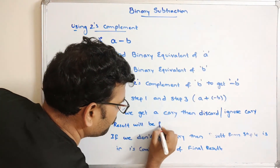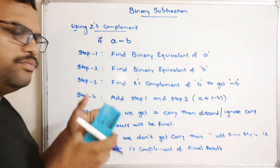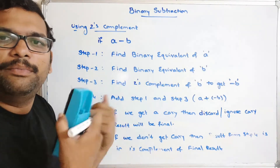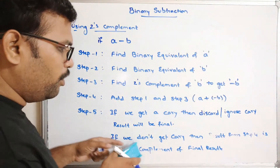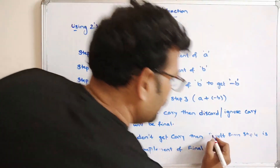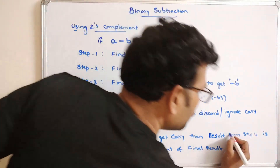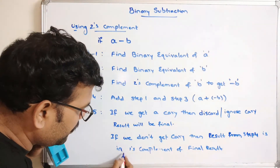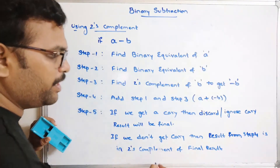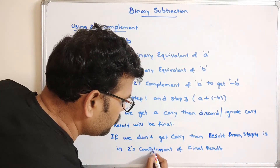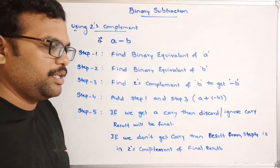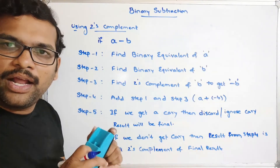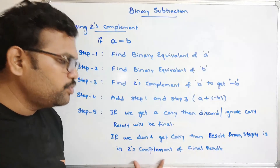After discarding or ignoring the carry, whatever result we are getting, that will be the final result. If you don't get any carry, then the result from Step 4 is in 2's complement form of the final result. We need to find the 2's complement of that result to get the final answer. So if you have a carry, just ignore it. If not, the result is in 2's complement form.